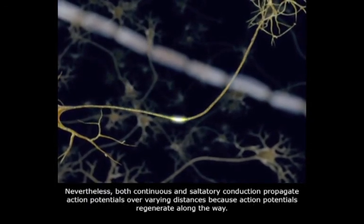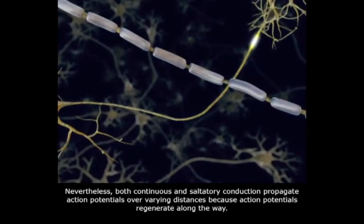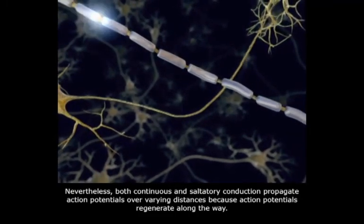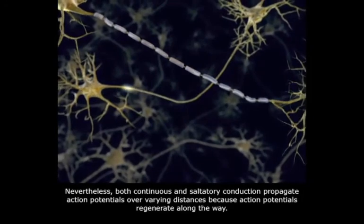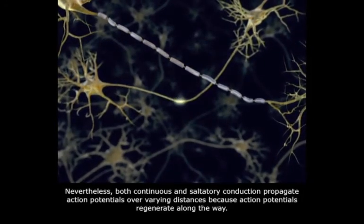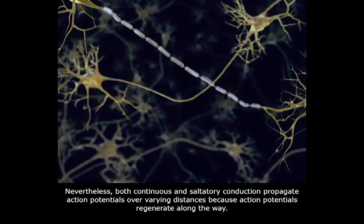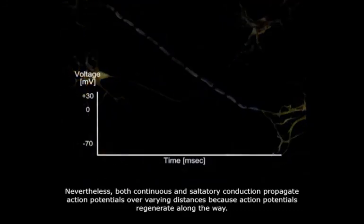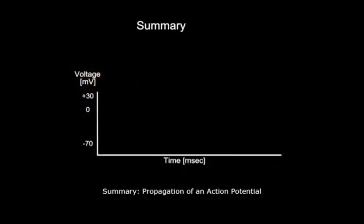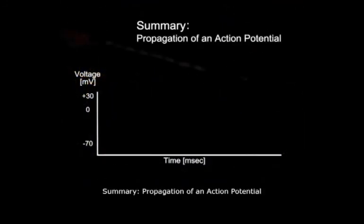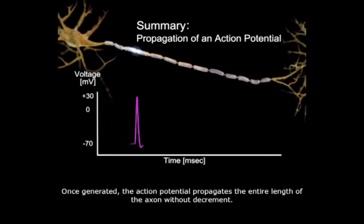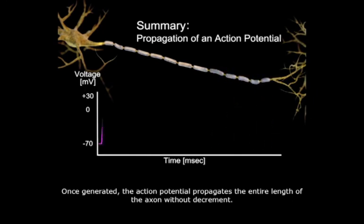Both continuous and saltatory conduction propagate action potentials over varying distances because action potentials regenerate along the way. Once generated, the action potential propagates the entire length of the axon without decrement.